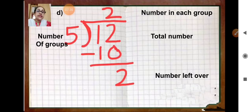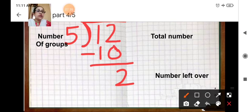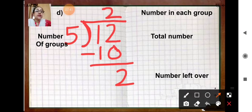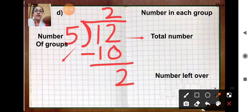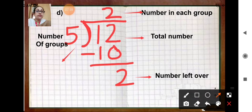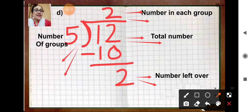The same thing explained here: twelve is the total number, five is the number of groups, two is the number in each group, and this two is the number left over. That means it is the quotient, dividend, divisor, and remainder.